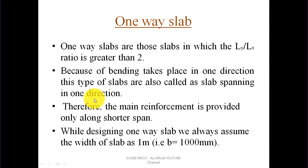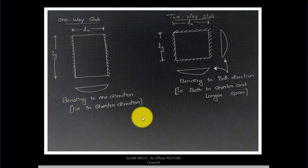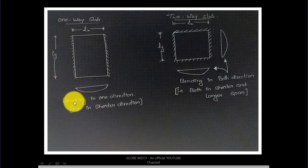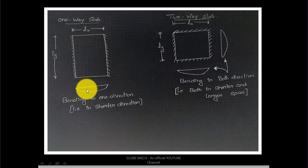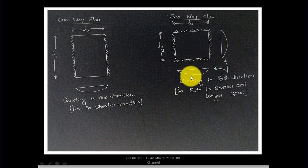Therefore, the main reinforcement is provided only along the shorter span. The purpose of providing reinforcement is to prevent the slab from bending — we provide strength in the form of steel. In a one-way slab, bending takes place in only one direction, so we provide main reinforcement along the shorter direction only.